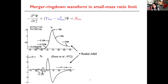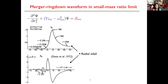When this approach was introduced in 1998, there were no results from numerical relativity. When LIGO and Virgo were built and started operating in early 2000, people were thinking that binary black holes might be discovered, not just binary neutron stars, and they might have a mass large enough that they merge in the bandwidth of the detector. That motivated the need to include the merger. I want to explain how you can guess the merger signal.